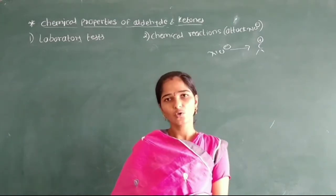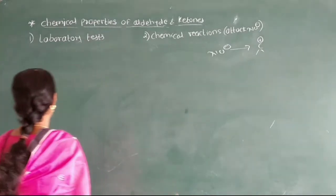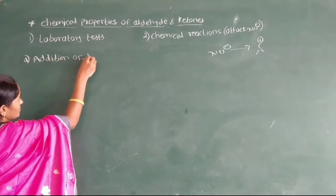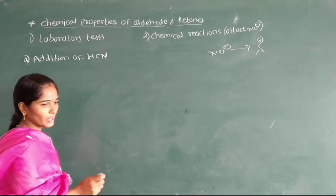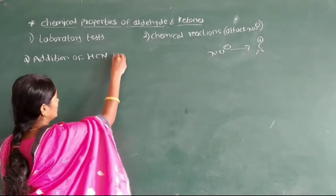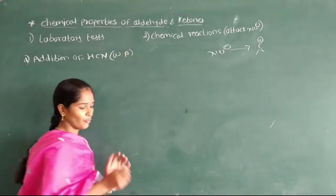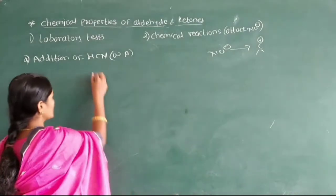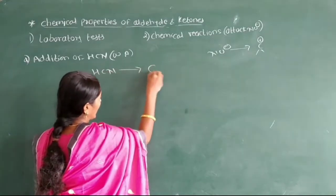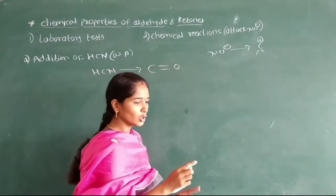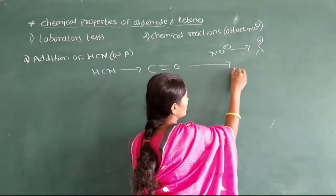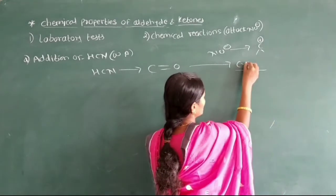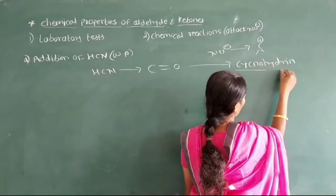Now we see the first chemical reaction of aldehyde and ketone: addition of cyanide. When hydrogen cyanide acts across the carbon-oxygen double bond, it leads to the formation of a new compound. This new compound is called a cyanohydrin compound. Let us see the formation of a cyanohydrin compound.